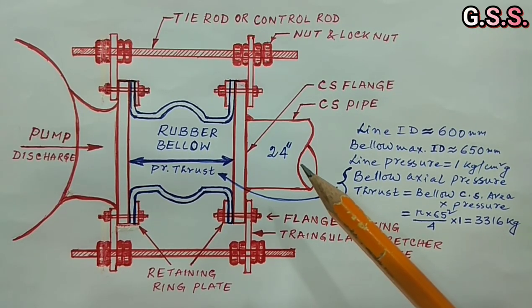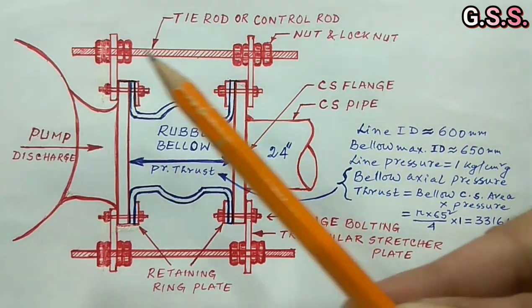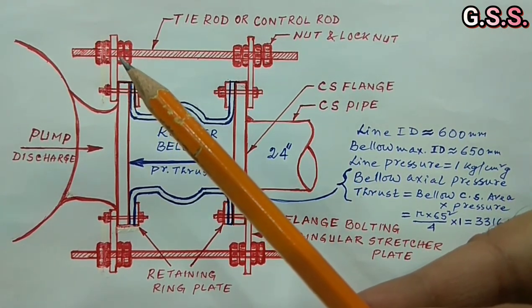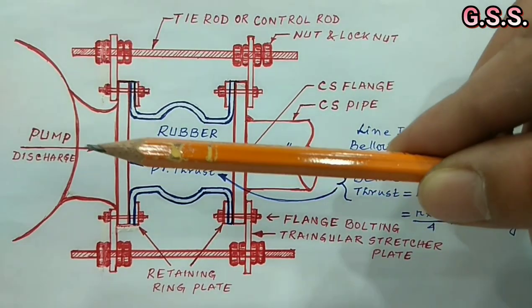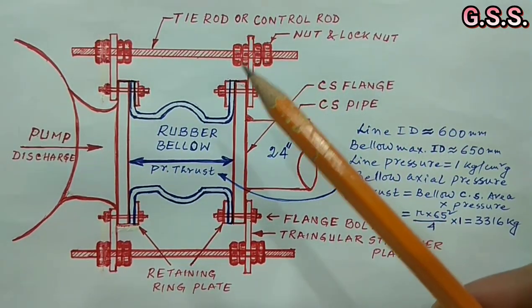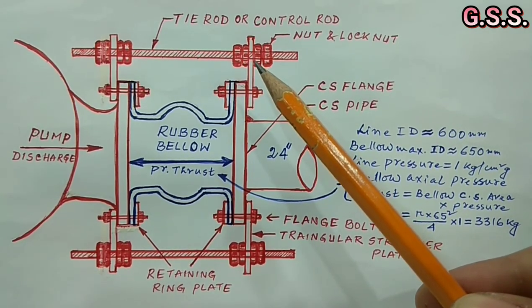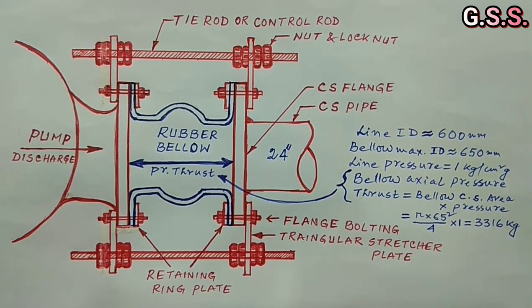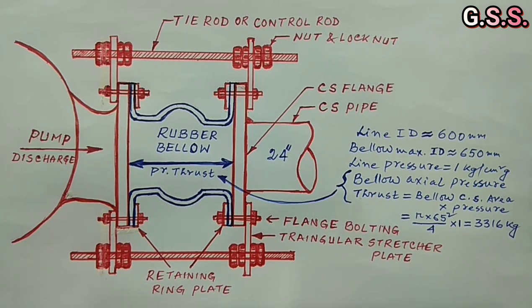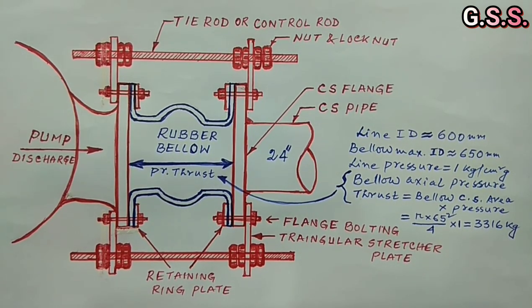So we have to keep tie rod nuts tight on both sides of the bellow and bellow will provide flexibility in lateral direction. We can provide only 1 mm gap here and 1 mm gap here so that bellow can be compressed or expanded by 1 mm only. Thereafter tie rod will take care of the load and nothing will happen due to this 1 mm movement.